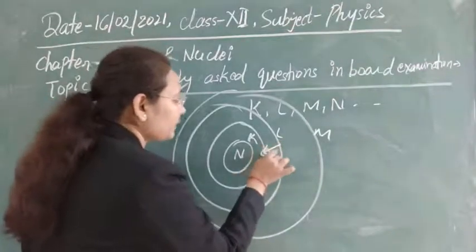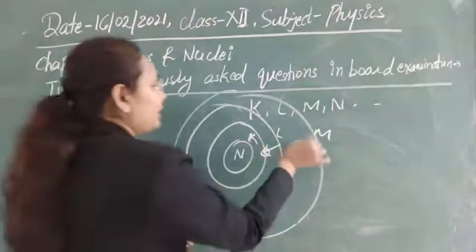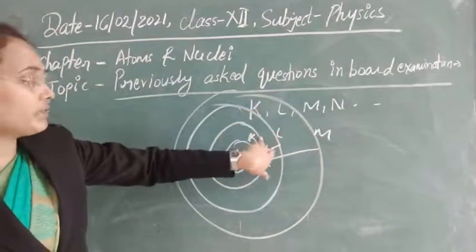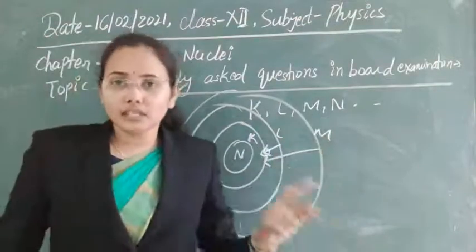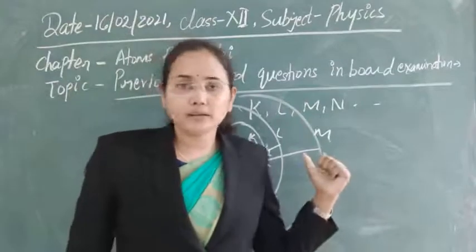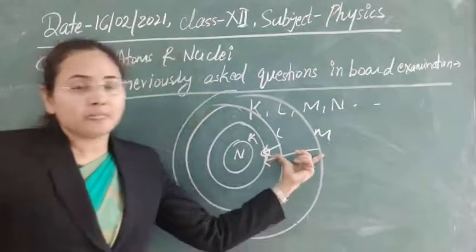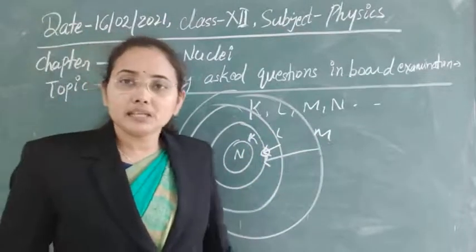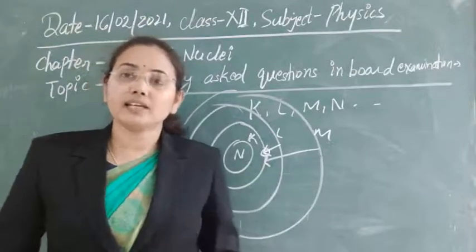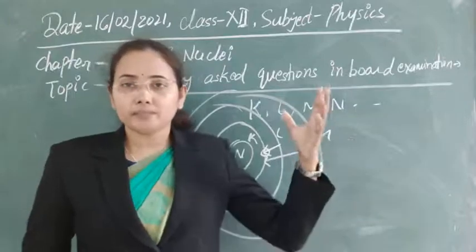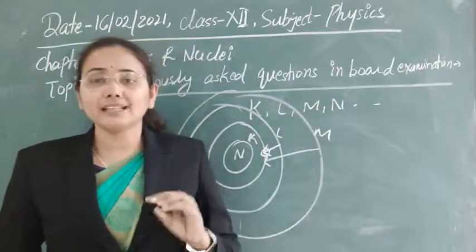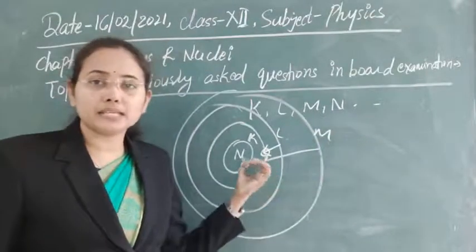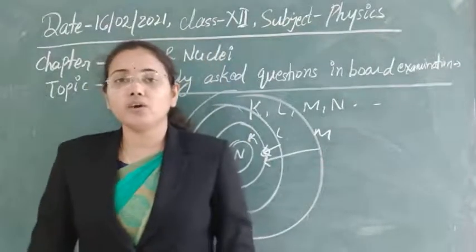An electron making a transition from L to K, or M to K, will emit radiation of different frequencies because K, L, and M shells each have different energies, calculable using Bohr's postulate. This gives a series of wavelengths, just as we get spectral series in hydrogen. When electrons from higher shells transition to the K shell, the resulting series of wavelengths is called the K series.